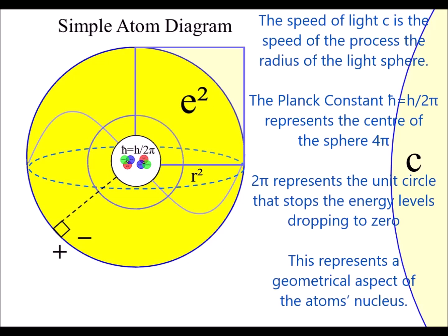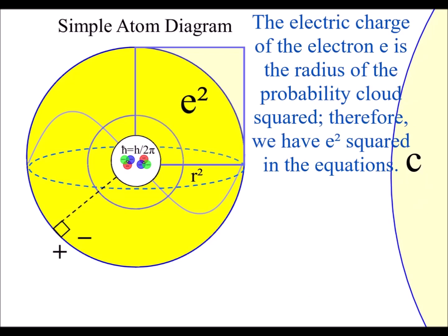Within this theory each constant has a geometrical aspect within this process. The speed of light c is the radius of the light sphere. The Planck constant h represents the center of the sphere and two pi represents the unit circle that stops the energy levels dropping to zero. The electric charge of the electron e is the radius of the probability cloud.